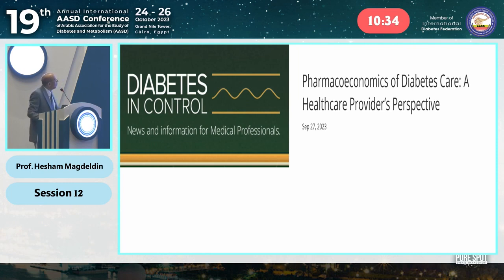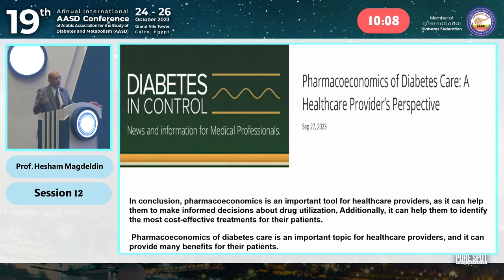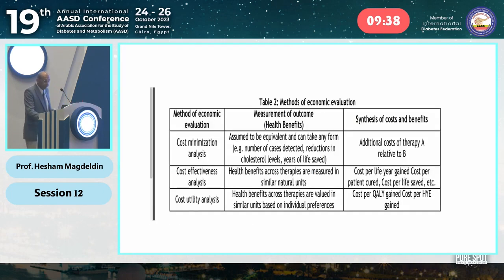Is cost-effectiveness important only for committees interested in cost in the government or hospital, or is it important for us as clinicians? A review article answered this: pharmacoeconomics from the healthcare provider perspective is indeed an important tool because it helps them make informed decisions about drug utilization. When you are in the clinic and a patient needs treatment, you choose between an expensive and a cheaper drug depending on cost-effectiveness.